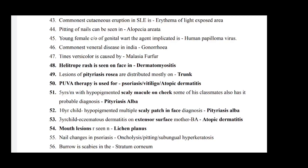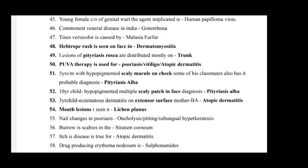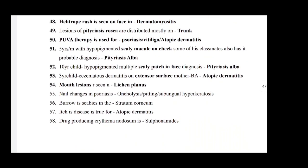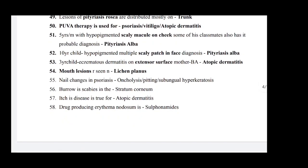Lesion of pityriasis rosea is distributed mostly on the trunk. PUVA therapy is used for psoriasis, vitiligo, and atopic dermatitis. A five-year-old male with hypopigmented scaly macule on cheek where some classmates also have the same: probable diagnosis is pityriasis alba. A ten-year-old child with hypopigmented multiple scaly patches on face: diagnosis is pityriasis alba. Three-year-old child with eczematous dermatitis on extensor surface: diagnosis is atopic dermatitis. Mouth lesions are seen in lichen planus. Nail changes in psoriasis include onycholysis, pitting, and subungual hyperkeratosis.